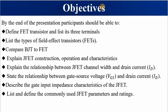Objectives. By the end of the presentation, you should be able to: number one, define field effect transistors and list their three terminals, just as we did for the BJT transistor. You must be able to list the types of field effect transistors. Number three, compare bipolar junction transistor to field effect transistors — we have covered BJT, so you must be able to compare and contrast BJT and FET.